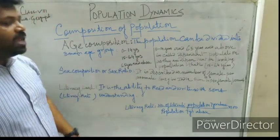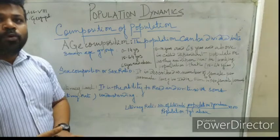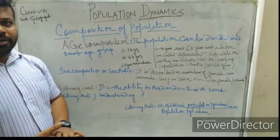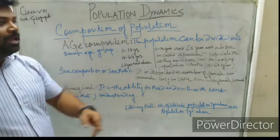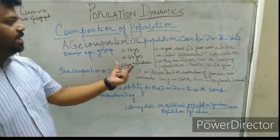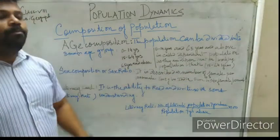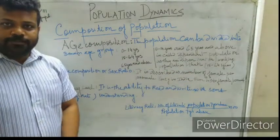The dependent population — age groups 0 to 14 and 65 and above — are not engaged in productive work. For their livelihood, they are dependent on the working population, which is the age group 15 to 64 years.